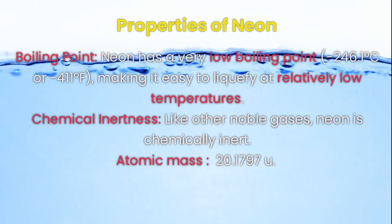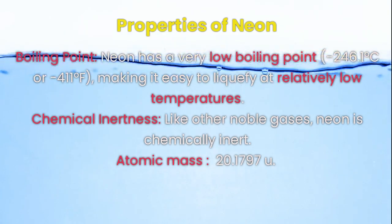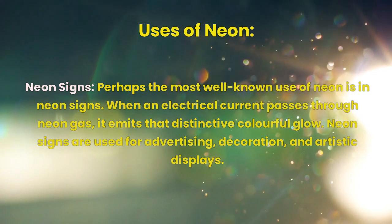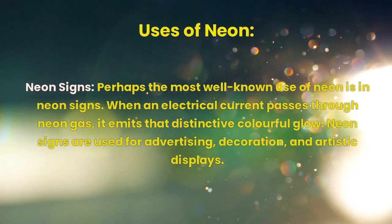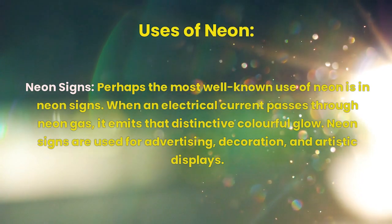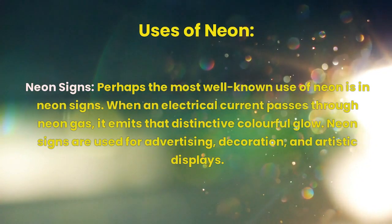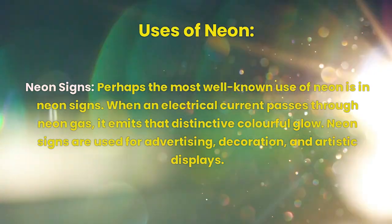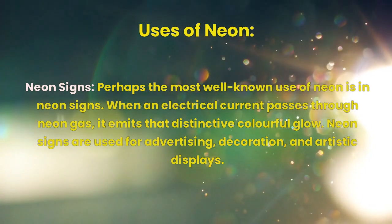Atomic mass: 20.1797 u. Uses of neon. Neon signs: Perhaps the most well-known use of neon is in neon signs. When an electrical current passes through neon gas, it emits that distinctive colorful glow. Neon signs are used for advertising, decoration, and artistic displays.